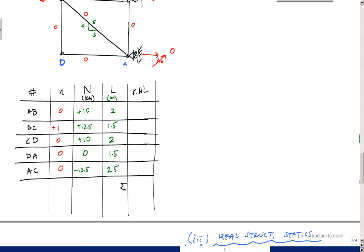Because EA is constant, I could just straight up multiply n times L here and multiply across. You can see that calculating these forces in AB, BC, DA, and AC were useless for this specific question of the horizontal displacement at C, because all the virtual forces here are 0, which makes these 0.